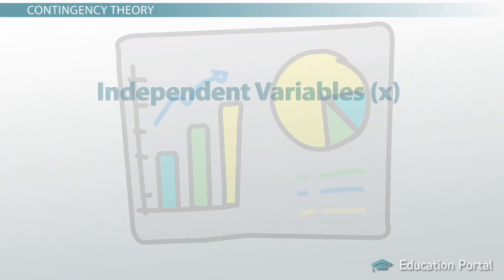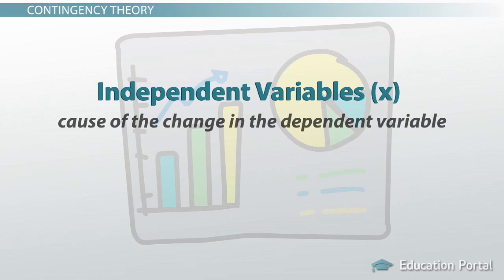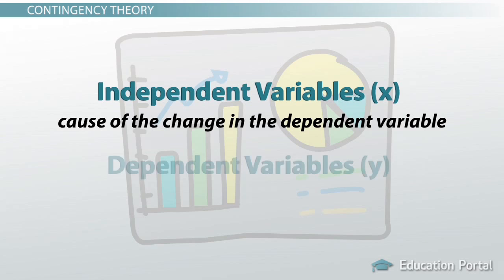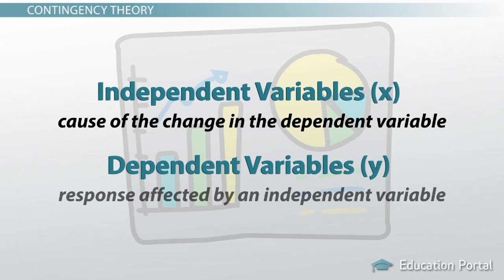Independent variables, or X, are the cause of the change in the dependent variable, while dependent variables, Y, are a response affected by an independent variable.